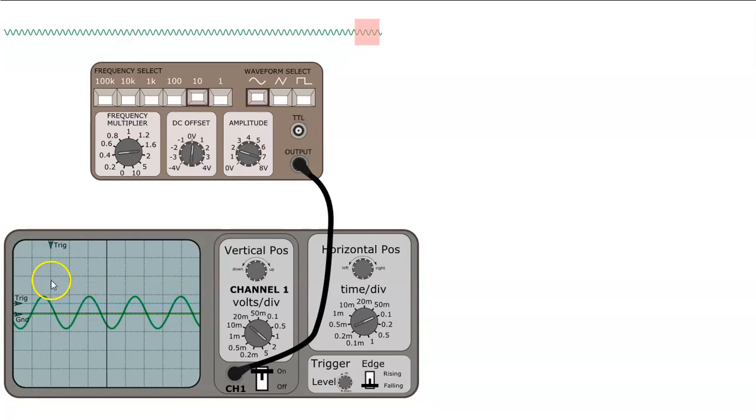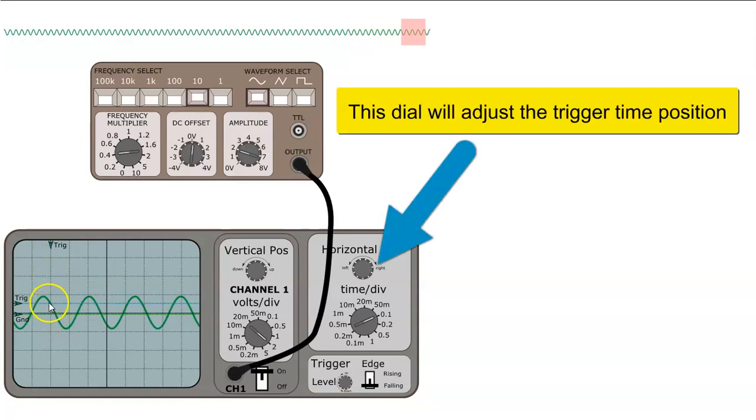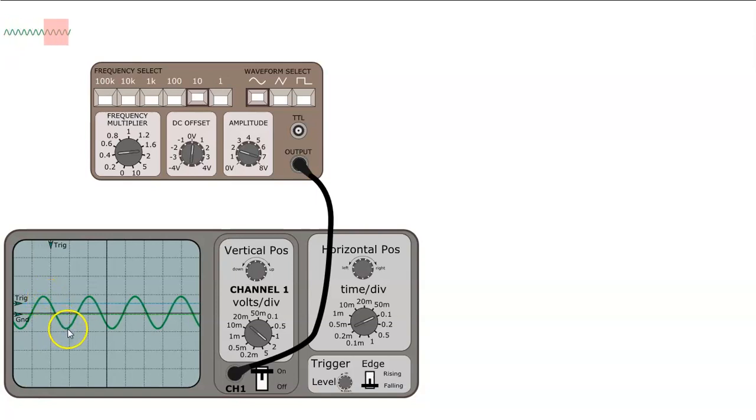So this arrow dictates the trigger time. So we're triggering on what's known as the falling edge. So we're going from a high voltage to a low voltage.